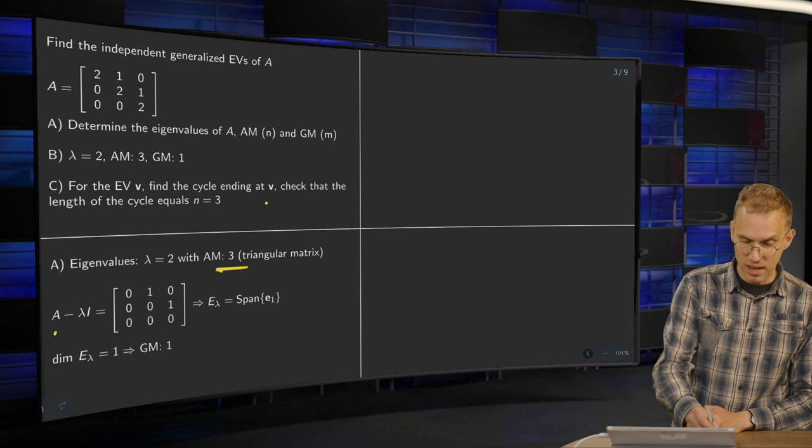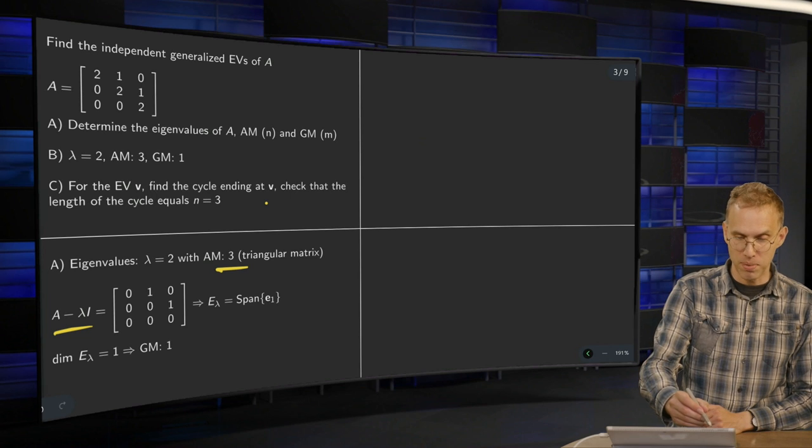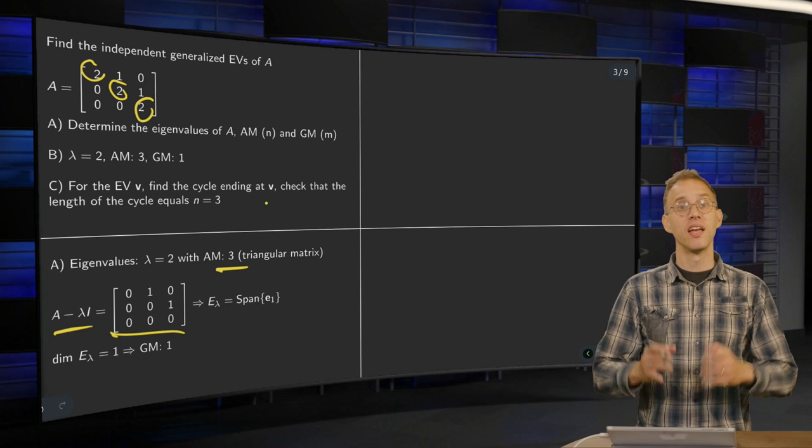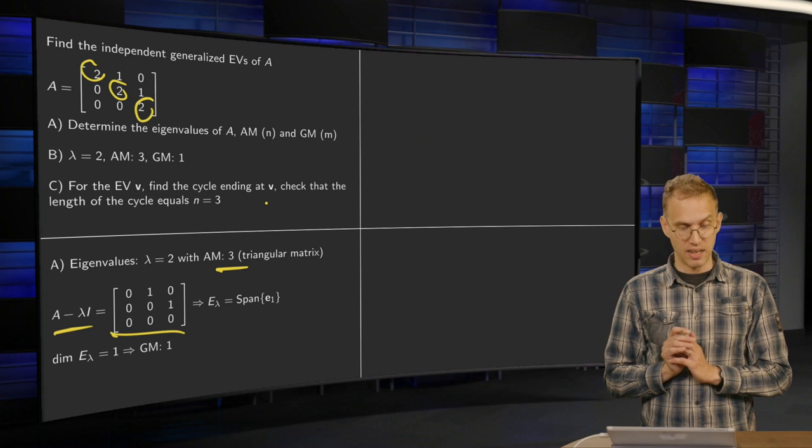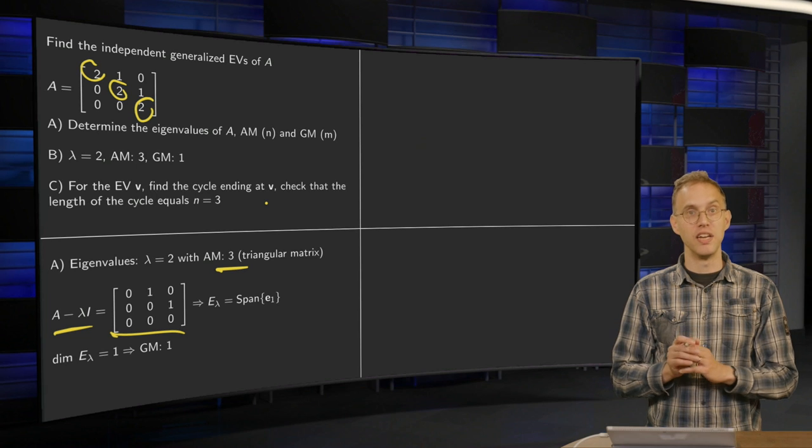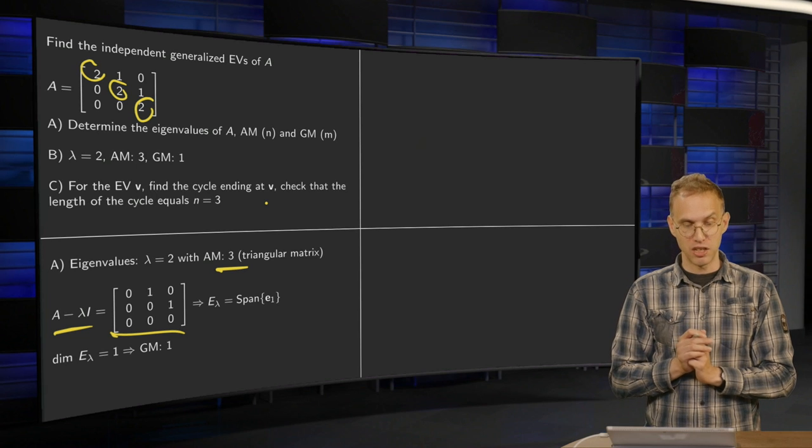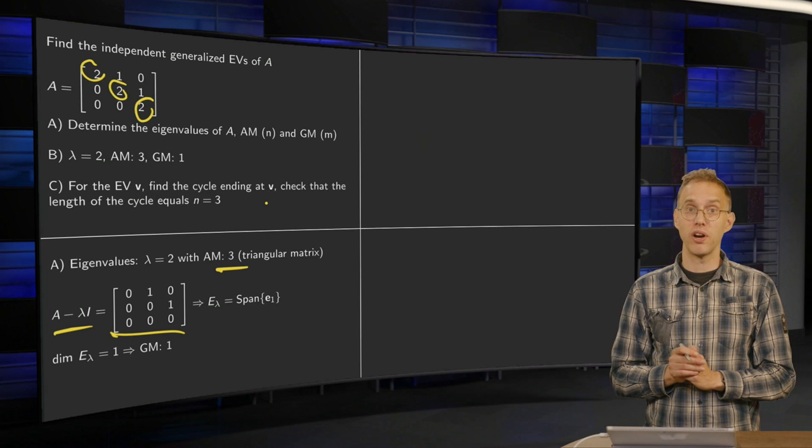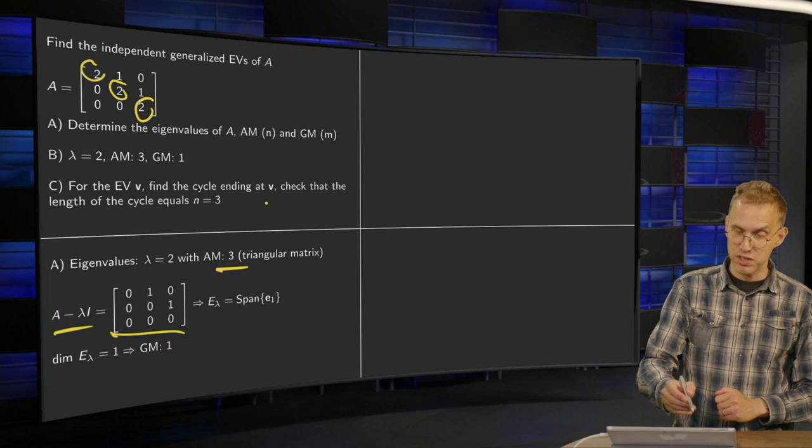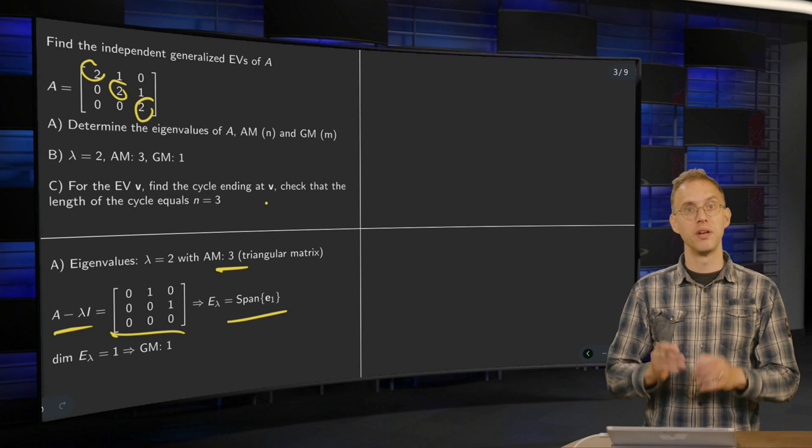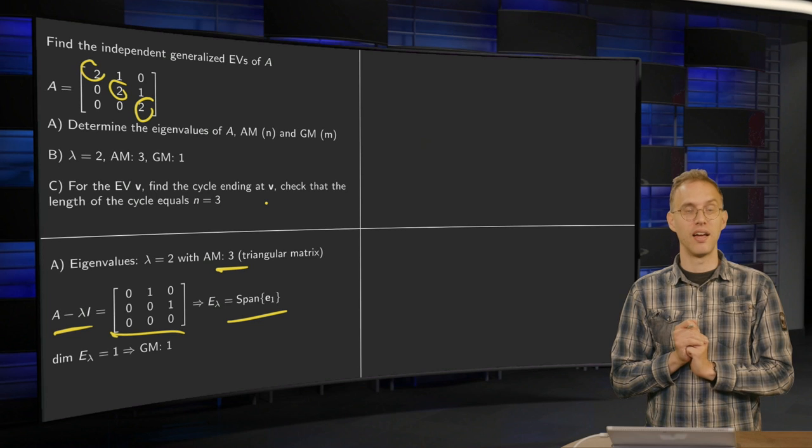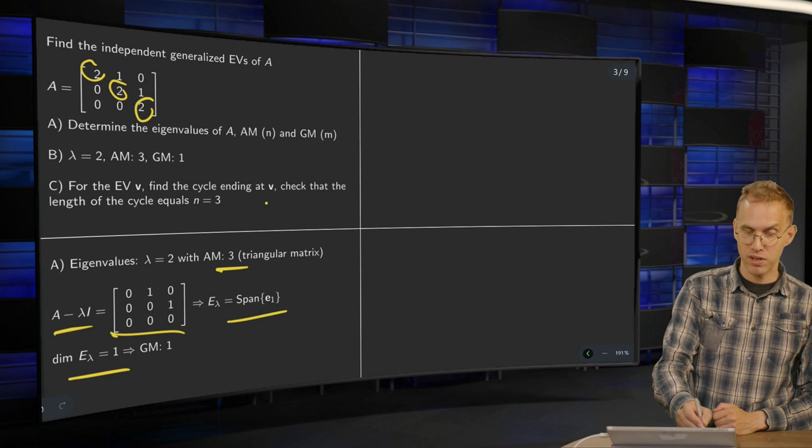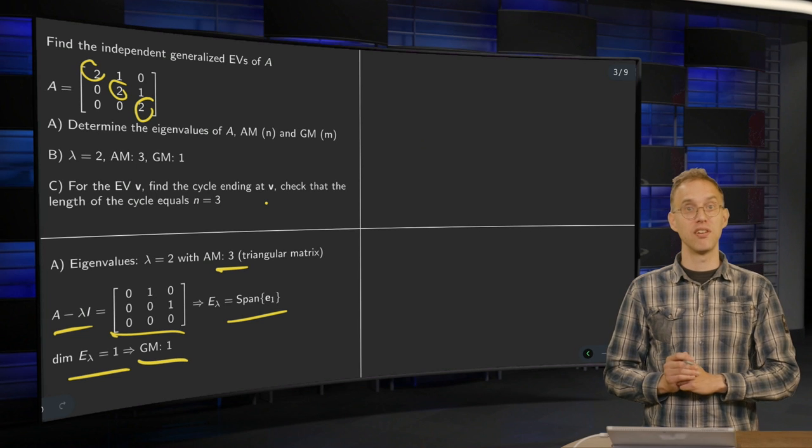We compute A minus lambda I. So that basically means that you kill off the twos on the diagonal. We have the matrix over here. And we can find the eigenspace by solving A minus lambda I times x equals 0. It's also nice for this matrix because it is already in echelon form. And we see that the eigenspace is a span of E1. So we have one independent normal eigenvector. So the dimension equals 1. So its geometric multiplicity equals 1.